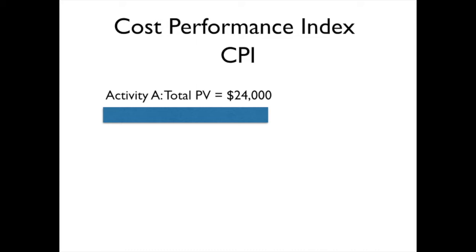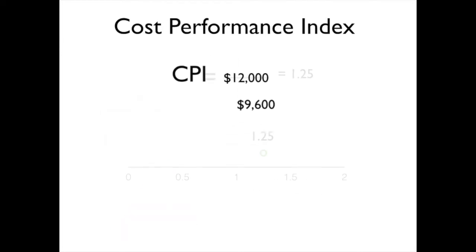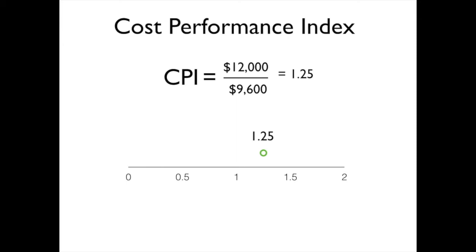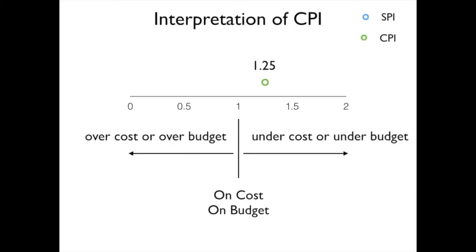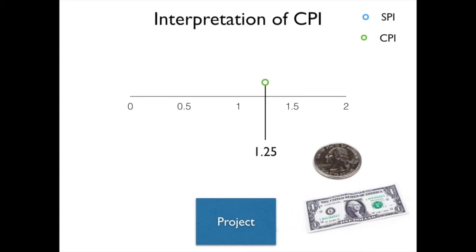Let's look at another example. We have activity A with a total plan value of $24,000 again. We are 50% complete with this particular activity, so our earned value is $12,000. But when we go talk to our friendly accountant, he tells us that our actual costs are $9,600. When we take EV and divide it by AC, we get $1.25. This indicates that our project is under cost or under budget. Another way to interpret this number is to say that for every dollar that we put into our project, we are actually getting $1.25 out.